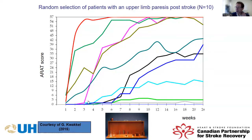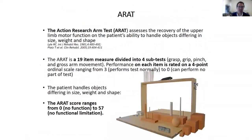One of the most commonly used measurement tools is the Action Research Arm Test. This assesses recovery of the upper extremity based on a patient's ability to handle objects differing in size, weight, and shape. It is a 19-item measure divided into four tasks: grasp, grip, pinch, and gross arm movement. Performance on each item is rated on a four-point scale ranging from three — normal — to zero — can't do it. The total score ranges from zero with no function to 57, and a kit comes with this test.